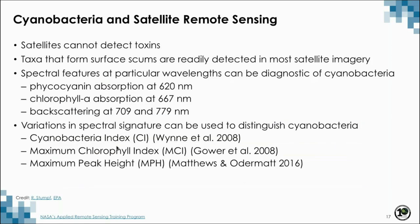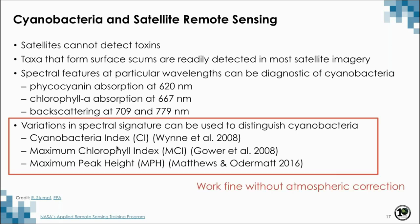It is important to be clear up front: satellites cannot detect toxins. In fact, it is unlikely that the current suite of multispectral satellites can effectively discriminate among cyanobacterial genera. Satellites readily detect cyanobacteria that form surface scums, and algorithms that use data in the red and infrared portions of the spectrum are currently in use. Some algorithms are able to detect optical features diagnostic of phytoplankton or cyanobacteria, including algorithms for chlorophyll, scattering at 709 and 779 nanometers, and light absorption by phycocyanin at 620 nanometers.